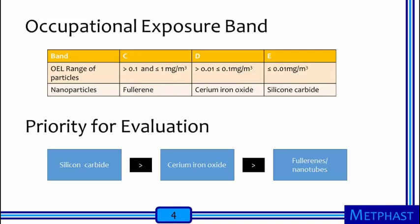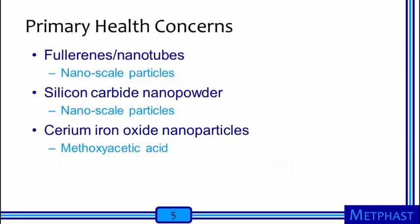Based on the respective bands and OELs of each of the three nanomaterials, priority of evaluation for potential worker exposure will be assigned as follows: silicon carbide nanopowder will have greater priority than cerium oxide nanoparticle, while cerium oxide nanoparticle will have greater priority over fullerene nanotube. For silicon carbide nanopowder and fullerene nanotube, the nanoscale objects are the primary health concerns, whereas for cerium oxide nanoparticle dispersion, one of its components, methoxyacetic acid, is the primary health concern. This concludes the activity on occupational exposure banding. Thank you for watching.